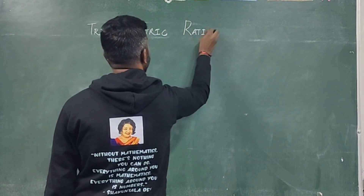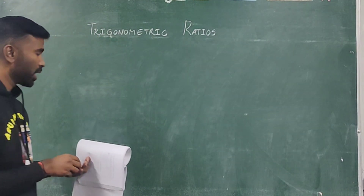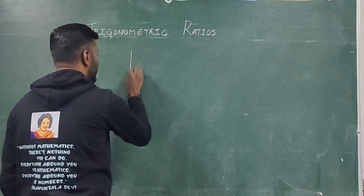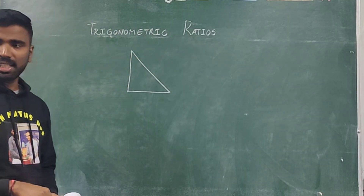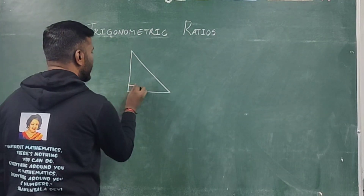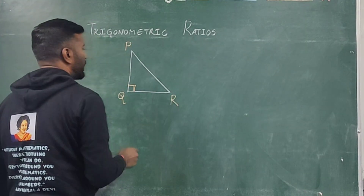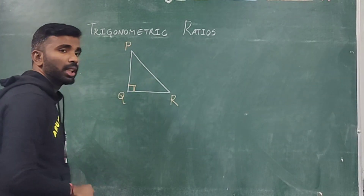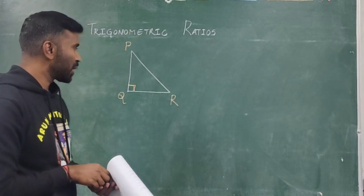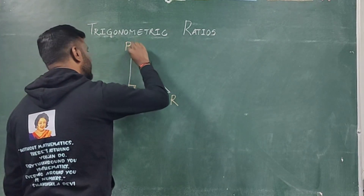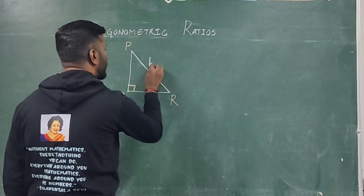We'll get two marks based on trigonometric ratios. Now, first try to understand what is a right angle triangle. If any one of the angles in a triangle is 90 degrees, then it is called a right angle triangle.